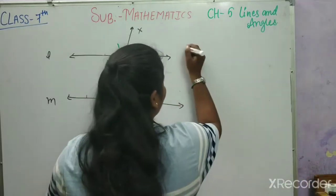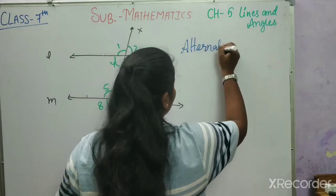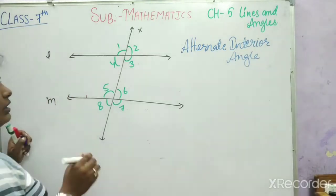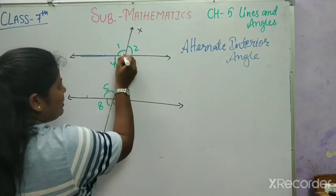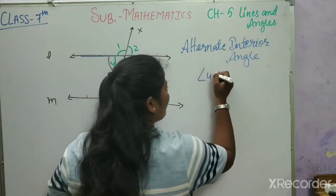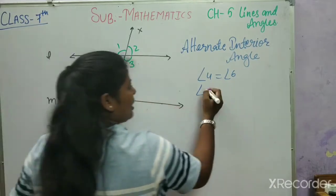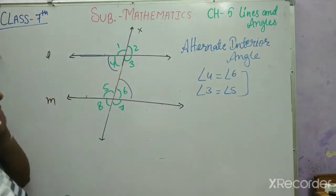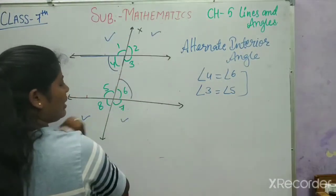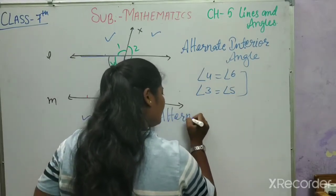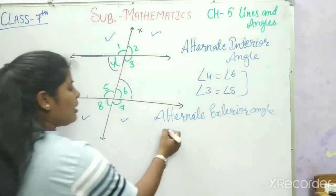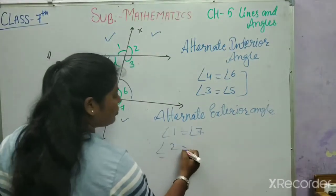The second type is alternate interior angles. Alternate interior angles form a Z-shape or S-shape. For example, angle 4 equals angle 6, and angle 3 equals angle 5 — these are alternate interior angles. Similarly, we have alternate exterior angles, which are on the exterior: angle 1 equals angle 7, and angle 2 equals angle 8. Interior angles are between the parallel lines, and exterior angles are outside.